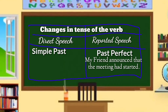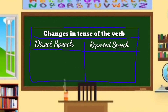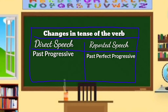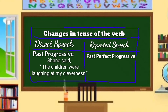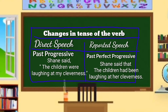Past progressive in direct speech becomes past perfect progressive in reported speech. For example — DS: Shane said, 'The children were laughing at my cleverness.' RS: Shane said that the children had been laughing at her cleverness. The verb 'were laughing' (past progressive) becomes 'had been laughing' (past perfect progressive).